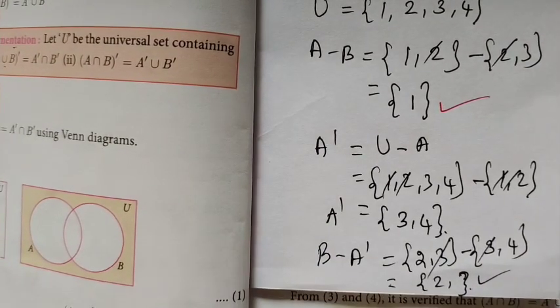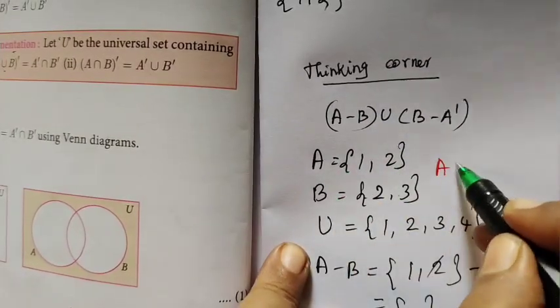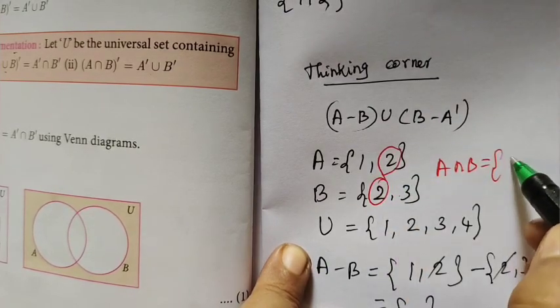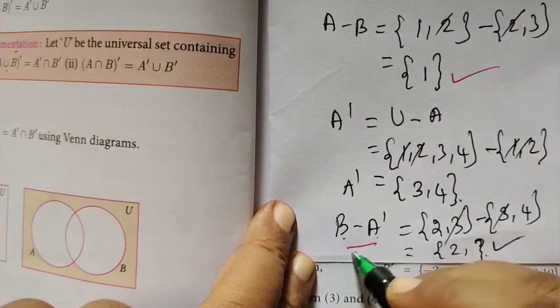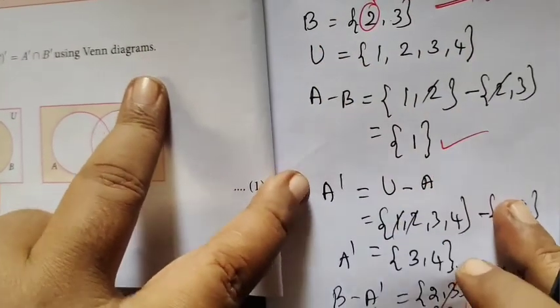Here A intersection B. This is A intersection B. What is A intersection B? A intersection B equal to 2. Now we will do A minus B. Then B minus A will do a union.